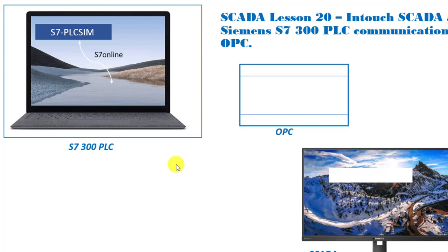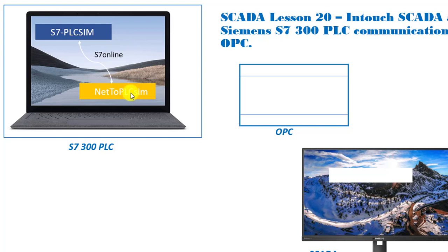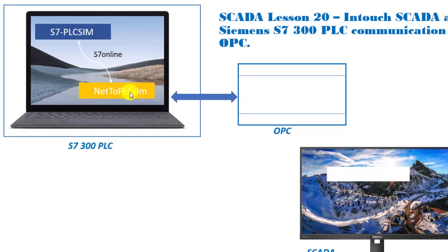We will then have the S7 online link with another software we term as Net to PLC Sim. Basically this software is to act as a bridge between our PLC Sim IP and then the IP of the laptop that we'll be using for our simulation. This particular software will serve as a bridge.